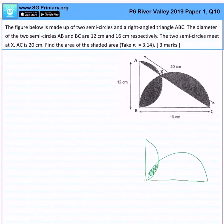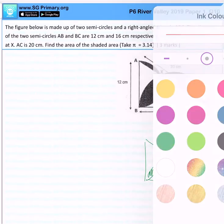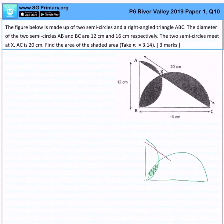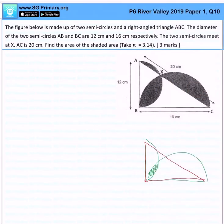But what happens if I take this area and I subtract it by the area of the triangle? What will be left? You realize that what will be left is actually this particular exposed area.